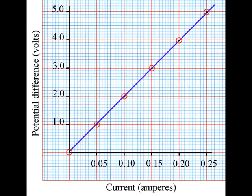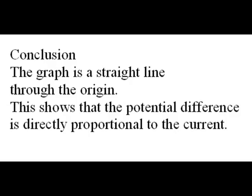In conclusion, the graph is a straight line through the origin. This shows that the potential difference is directly proportional to the current.